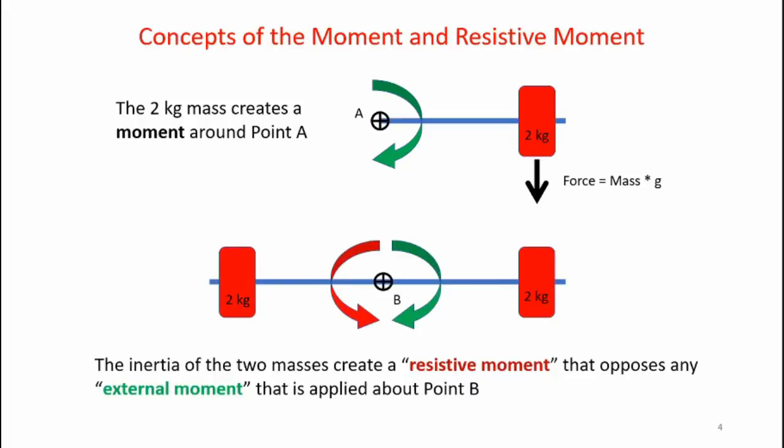Now if I expand that diagram and add another mass to the other side and I have those two masses equidistant from point B the system initially will not want to rotate. However if I apply a torque around point B I can try to get the system start rotating in a clockwise direction. If I apply that torque I'll get a rotational acceleration. However the inertia of the two kilogram masses resists my attempt to accelerate the system in the clockwise direction. So that anti-clockwise moment is my resistive moment.